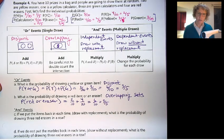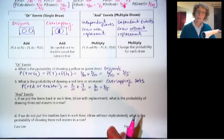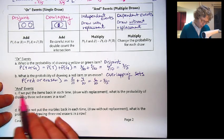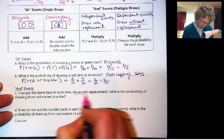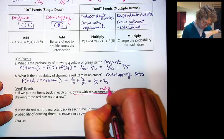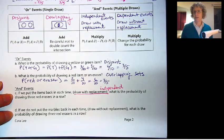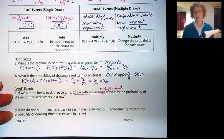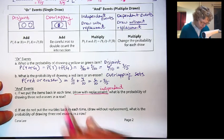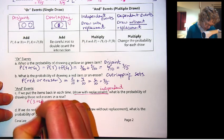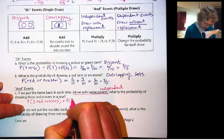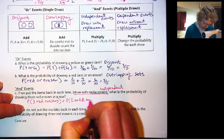In both cases, we're going to multiply. When they're independent, we can just multiply the individual probabilities. But for dependent events, we have to change the probability for each draw. So for C, if we put the items back in each time, that's with replacement. So that means they are independent events.